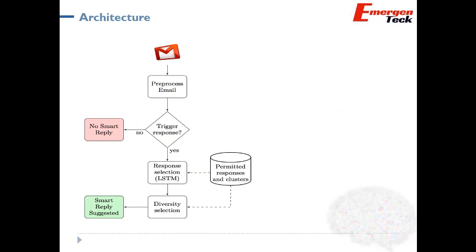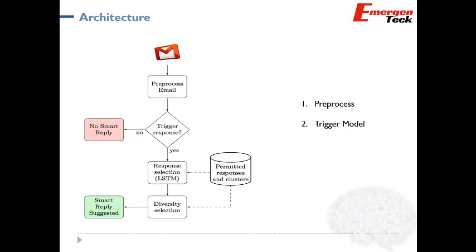Let's understand this better through a pictorial representation. Step one is pre-processing — the process of cleaning the data to make sure that clean, correct data is fed into the machine learning model. Step two is the trigger response, which is a feed-forward RNN model that decides whether to suggest a response, and in return improves the model so that next time it generates a better, more helpful response.